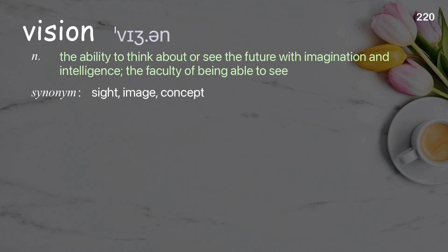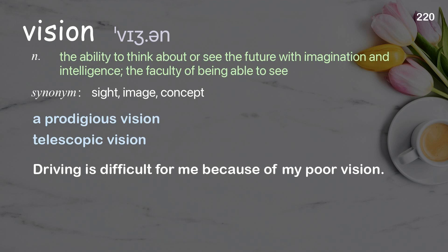Vision: the ability to think about or see the future with imagination and intelligence; the faculty of being able to see. Examples: a prodigious vision, telescopic vision. Driving is difficult for me because of my poor vision.